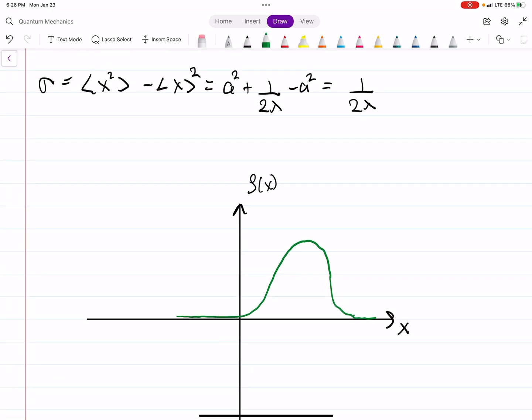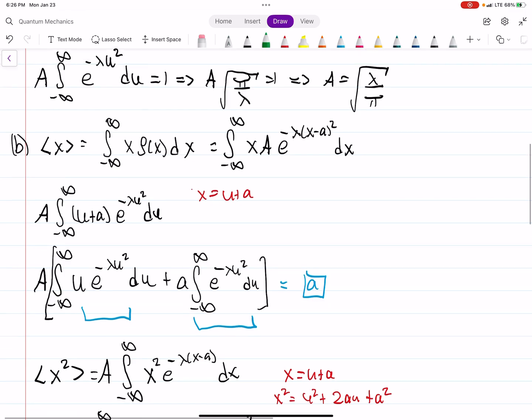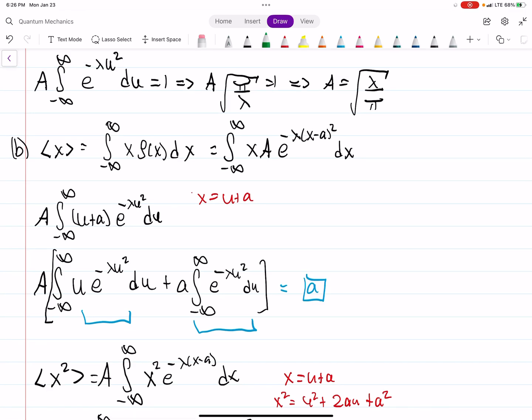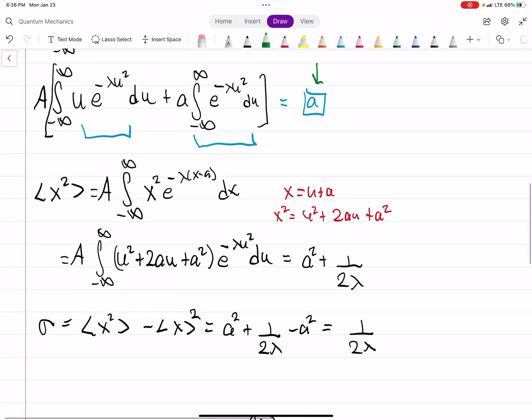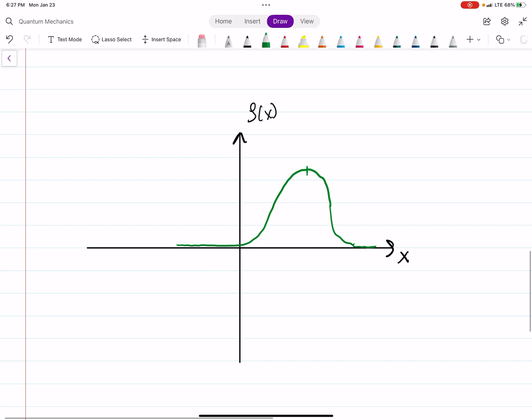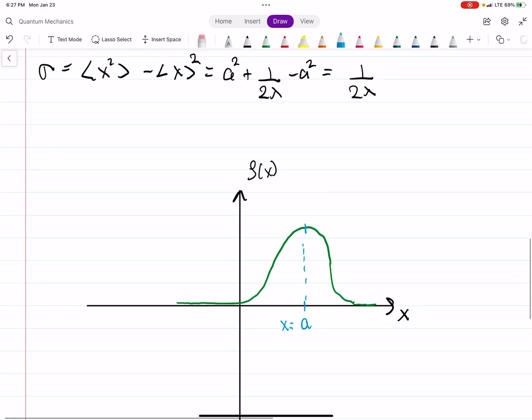That's kind of what a bell curve looks like. And we know from the expectation value, we calculated the expectation value in part A. We saw that, or part B, we saw that the answer was A. Let's do it actually in blue here. So this peak here will be at x equals A. And that's the probability distribution.